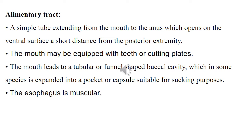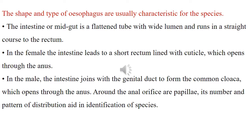In some species the buccal cavity is expanded into a bucket or capsule suitable for sucking purposes. The oesophagus is muscular; the shape and type of oesophagus are usually characteristic for the species. The intestine or midgut is a flattened tube with a wide lumen and runs in a straight course to the rectum. In the female, the intestine leads to a short rectum lined with cuticle, which opens through the anus. In the male, the intestine joins with the genital duct to form the common cloaca, which opens through the anus. Around the anal orifice are papillae.